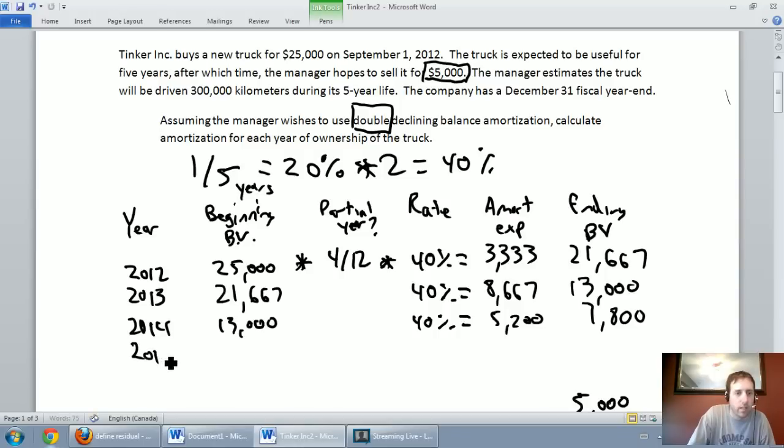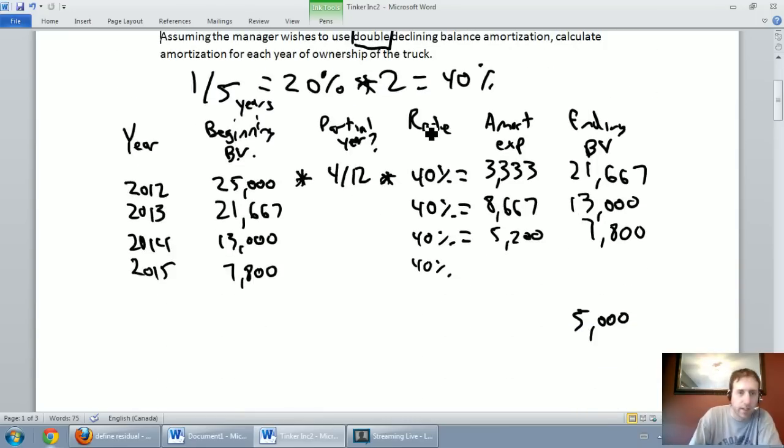On to 2015. I started with an asset on my books for $7,800. I'm going to take 40% amortization, so $7,800 times 0.4 is $3,120. Now I'm going to stop right here. I can see I'm bumping into a problem. I've said I'm not going to amortize this asset below $5,000. This asset has to remain at $5,000. If I amortize this for 40%, which was $3,120, $7,800 minus $3,120 is going to take me below $5,000.